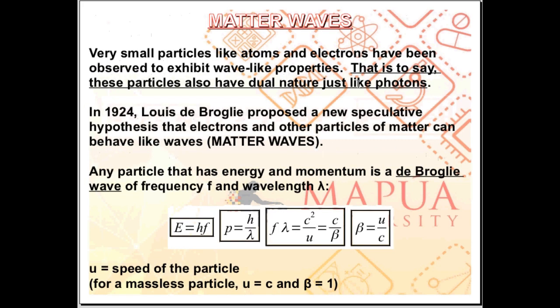Next, we have matter waves. Very small particles like atoms and electrons have been observed to have a dual nature just like photons. Meaning, very small particles behave both as a wave and as a particle.